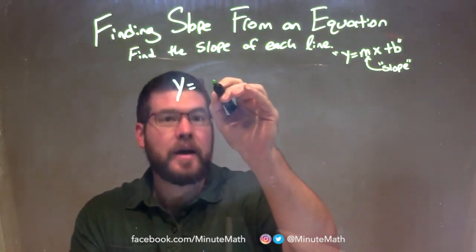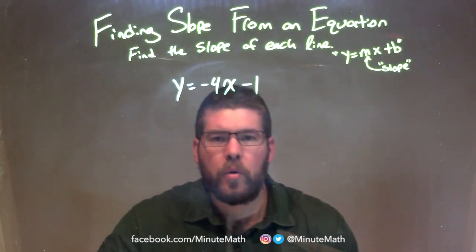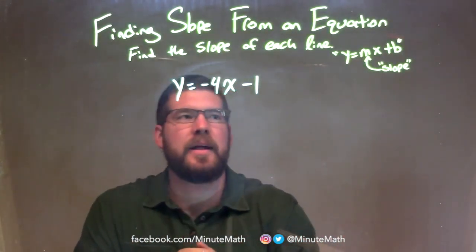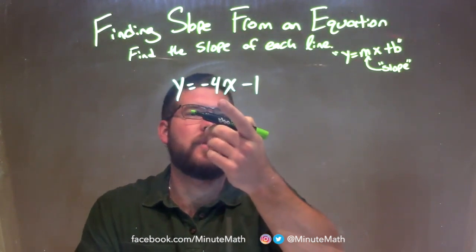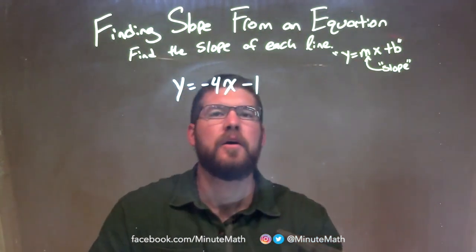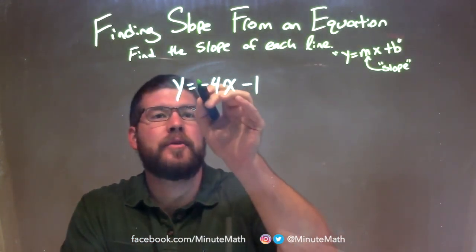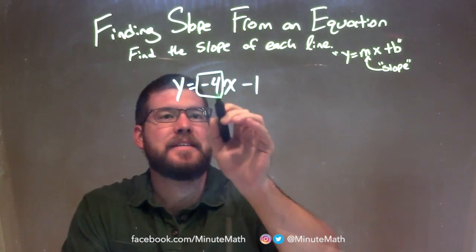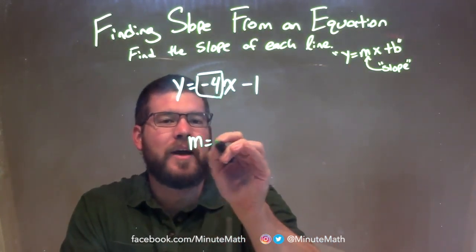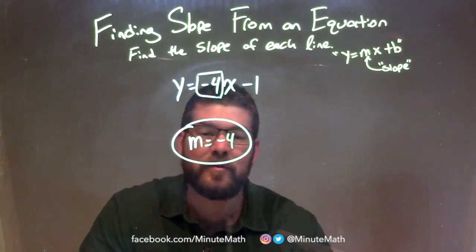y equals negative 4x minus 1. We notice it's already in slope-intercept form; we don't need to simplify it anymore. We have y equals negative 4x minus 1 as y equals mx plus b. We need to find our m value, which is our slope. Negative 4 right there is the coefficient in front of x, and so that is our slope value: m equals negative 4. Our slope is just negative 4.